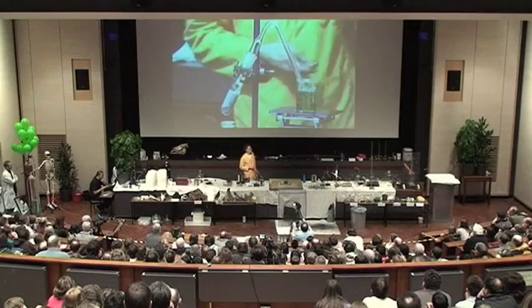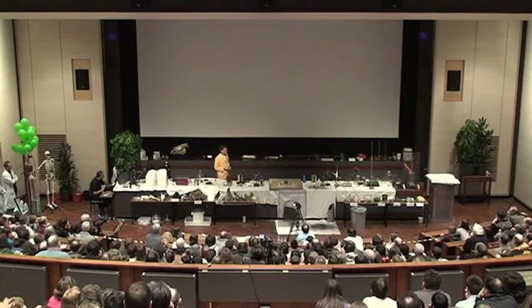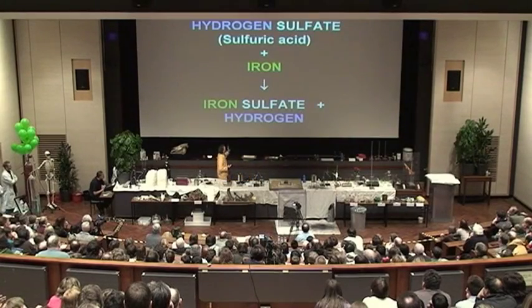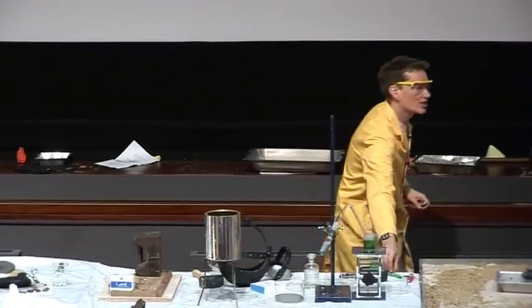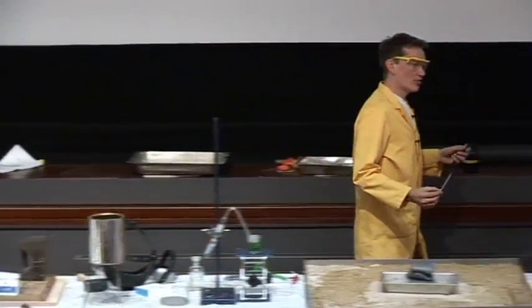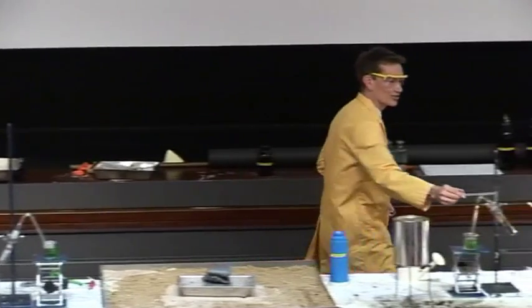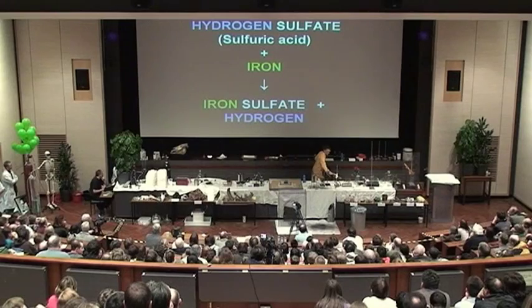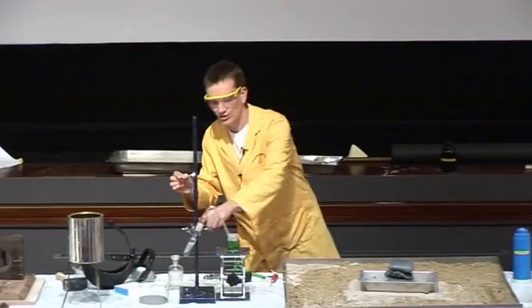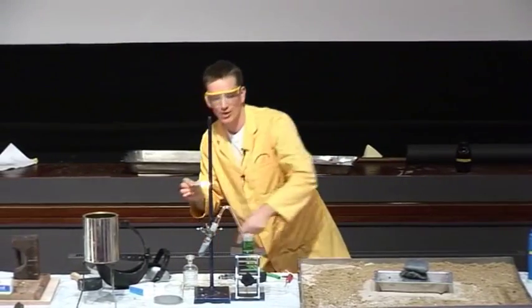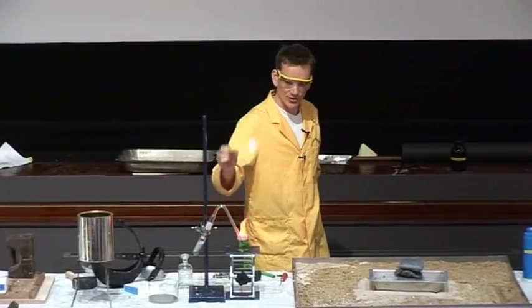Let's have a look at the chemical equation for this. Sulfuric acid could be called hydrogen sulfate — we could call it that. So the sulfuric acid, the hydrogen sulfate, is reacting with the iron, and we're forming iron sulfate. That's going to remain in solution over here, and the hydrogen gas comes out.